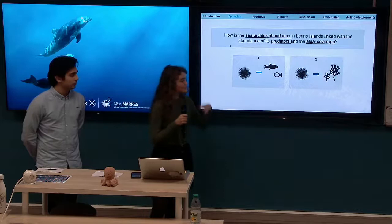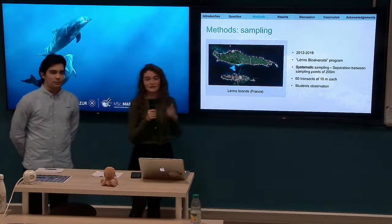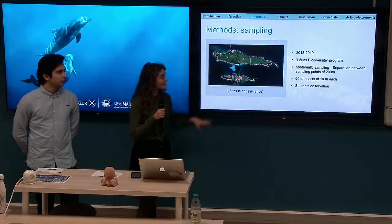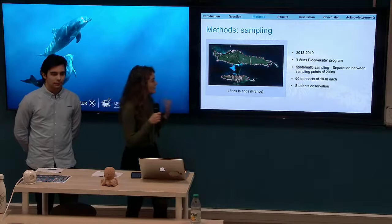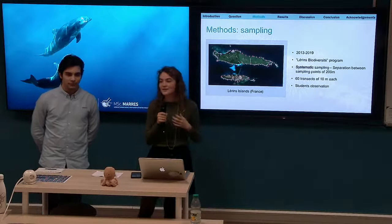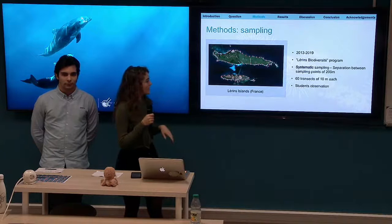In order to answer this question, we used data gathered in the Lérins Islands in the Cannes Bay in the south of France, from 2013 to 2019, as part of the Lérins University Programme at the University Côte d'Azur. These islands, composed of Sainte-Marguerite and Saint-Honorat in the south, are part of the Natura 2000 marine reserve and are visited every summer by hundreds of tourists. Sampling was made every September of this time range, except 2017.